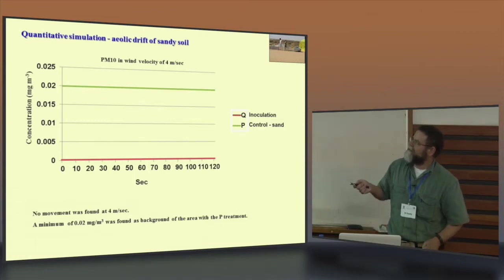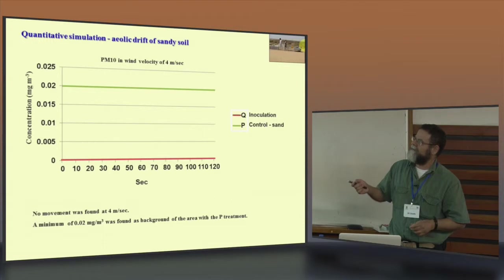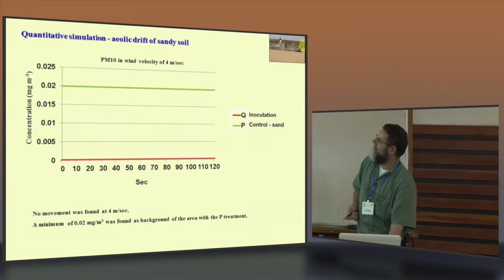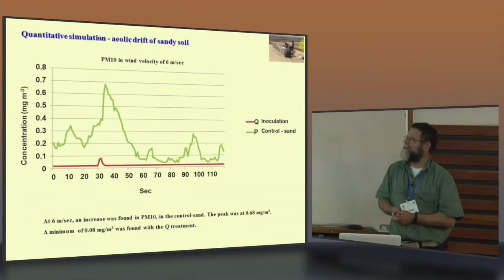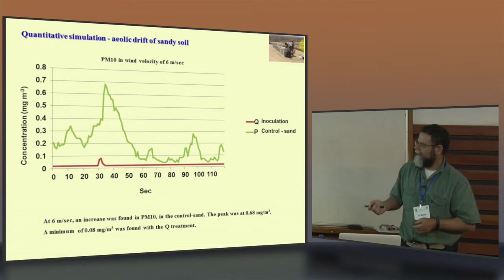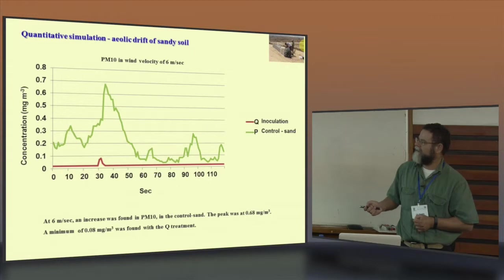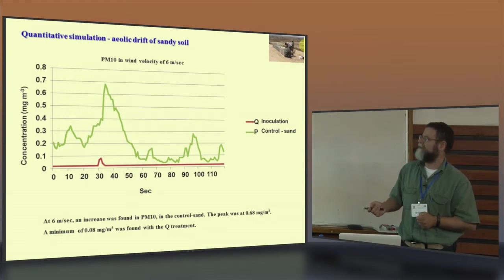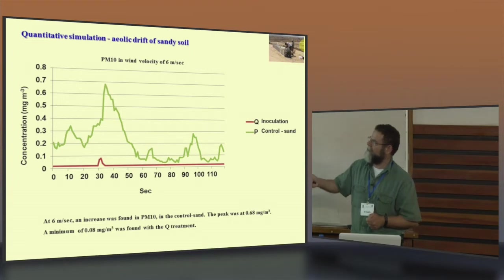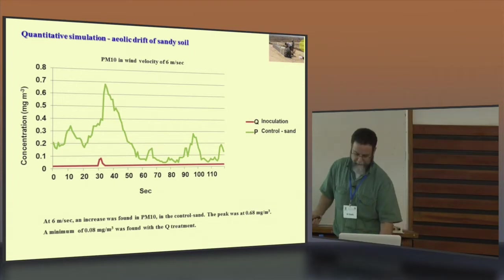In the four meter per second wind velocity, nothing happened. It's very low. It's actually the background concentration. When we increase to six meter per second, in the control sand, the peak was about 0.68 milligram per cubic meter. And a minimum of 0.08 milligram per cubic meter was found in the inoculation. So, immediately the sand, and this is with the inoculation.